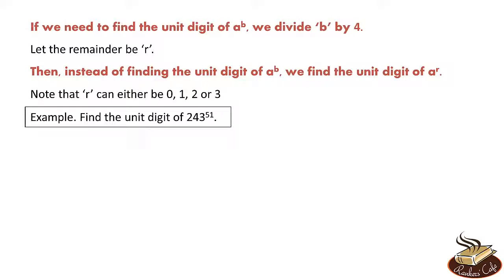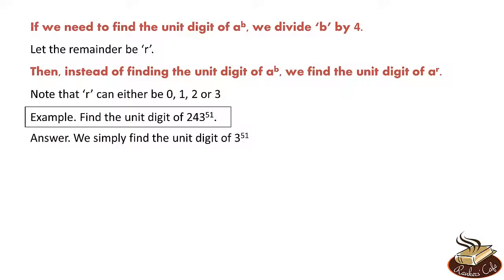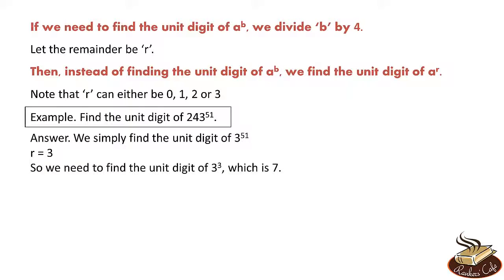Let's do another example: find the unit digit of 243^51. We ignore the 2 and 4, and simply find the unit digit of 3^51. Divide 51 by 4; it gives a remainder of 3. So we need the unit digit of 3^3, which is 27 — giving a unit digit of 7.